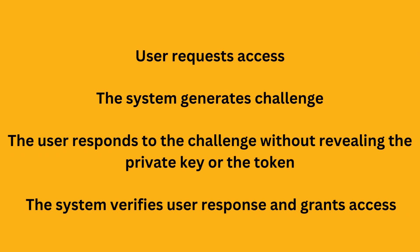The user wants to access a restricted resource, such as a file or a network. The server generates a challenge, which is a random value that the user must use to prove that they have the necessary permissions. The user uses their private key or other information that they possess, such as a token, to create a response to the challenge, without revealing the private key or the token itself. The server verifies the response and, if it is valid, grants the user access to the resource.